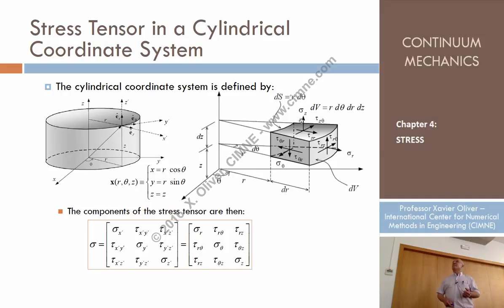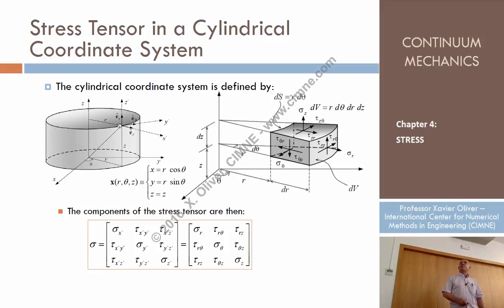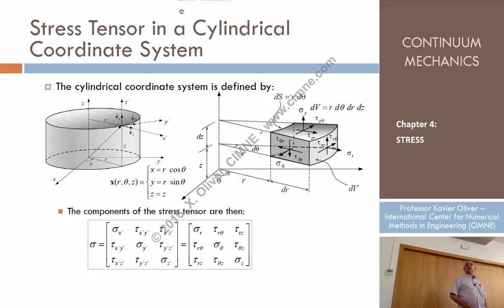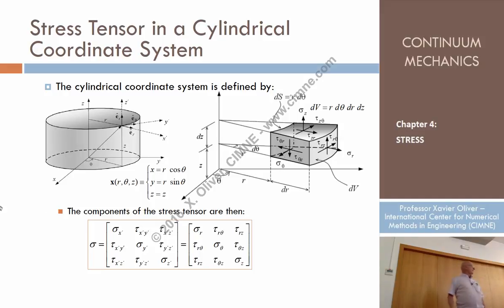The same applies for sigma z: sigma z is positive in tension and negative in compression. That doesn't matter if it's a positive or negative plane. Is this plane a positive plane or negative plane? It's positive because it follows the normal — that one. So the criterion is: tau z-theta positive follows the increasing sense of coordinate r. But in this hidden negative plane, if I want to plot the stress state according to this stress tensor, I have to plot sigma z downward, tau z-theta in that sense, and tau z-r in that sense.